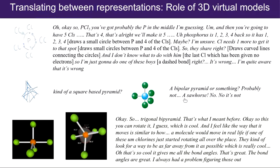When they encountered the 3D model and were able to interact with it — the PhET molecular shape model, which is really quite mobile — they were very taken with it. So it's trigonal bipyramidal. You can rotate it, which is 'just cool — I feel like the way that it moves is similar to how a molecule would move in real life. If one of these chlorines just started rotating all over the place, they kind of look for a way to be as far away as possible, which is really kind of cool.' They kind of learned through interacting with that 3D model and they've seen the terminology. That competence — not just what they're looking at but the language that goes with it — builds back to Martina Rao's framework in terms of fluency versus understanding.